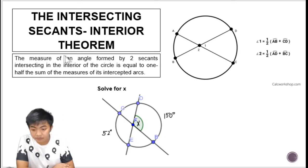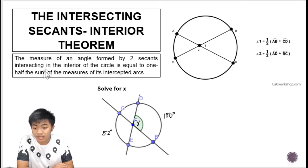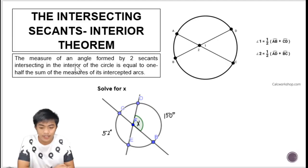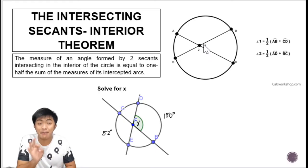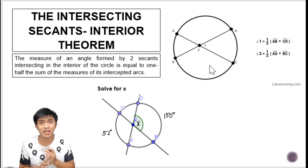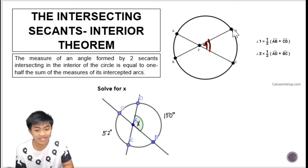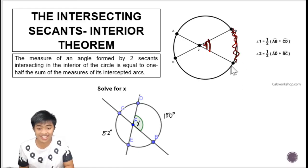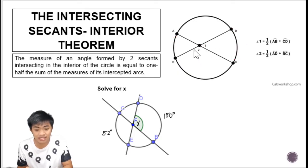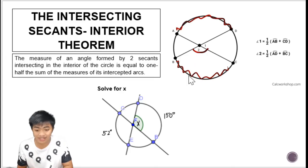Let's move to the last theorem: the Intersecting Secants Interior Theorem. It states that the measure of an angle formed by two secants intersecting in the interior of a circle is equal to one half the sum of the measures of its intercepted arcs. When two lines meet inside the circle, four angles are formed. To find the measure of one angle, we add the degree measures of its two intercepted arcs — the arc it directly intercepts and the arc on the opposite side — then divide by two. Note: inside the circle we add, outside the circle we subtract.